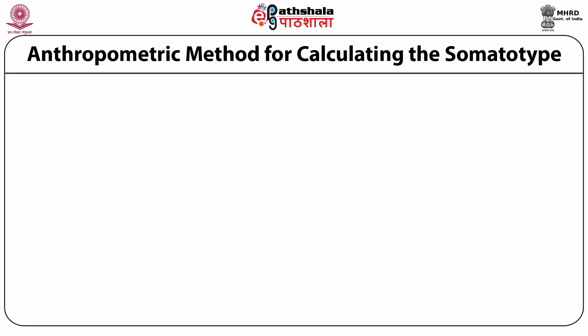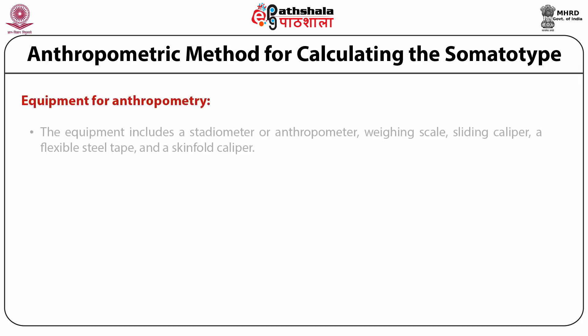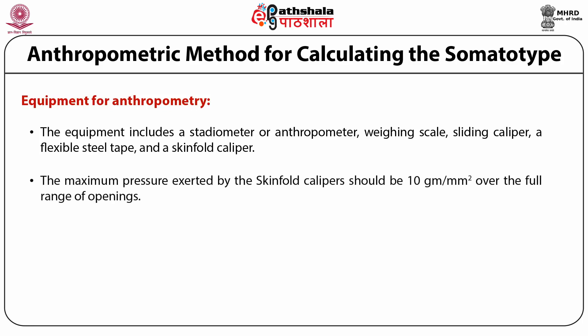For the anthropometric method of calculating somatotype, the equipment includes a stadiometer or anthropometer, weighing scale, sliding caliper, a flexible steel tape, and a skinfold caliper. For accurate measuring of bi-epicondylar and femur breadths, the caliper branches must extend to 10 cm and the tips should be 1.5 cm in diameter. The maximum pressure exerted by skinfold calipers should be 10 grams per mm square over the full range of openings. Types include the Harpenden caliper, Haltane caliper, and others.